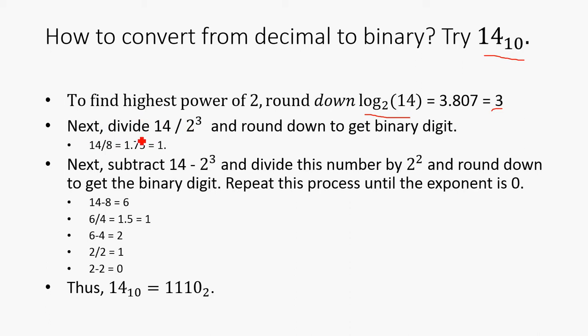So the first thing we want to do is divide 14, which is our original number, by 2 to the 3, which is 8. So 14 divided by 8 is going to be 1.75, and then we round down to get the binary digit. So this is going to be 1. Next we're going to subtract 14 by this number here, and we're going to divide this number by 2 squared, which is the next exponent down. So 14 minus 8 is 6. 6 divided by 2 squared is going to be 1.5, which if we round down, it's going to be 1. So that's our next digit.